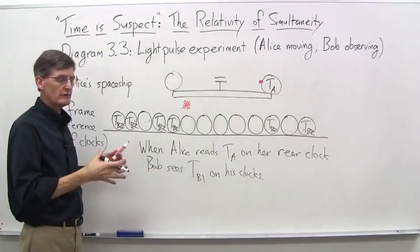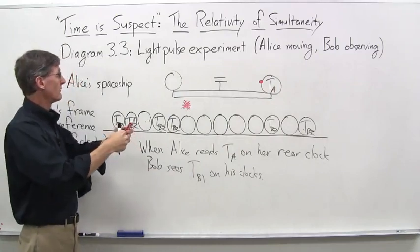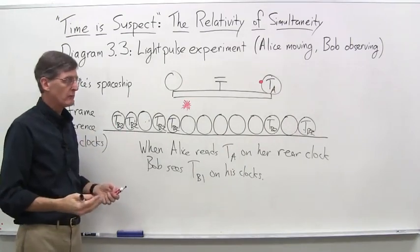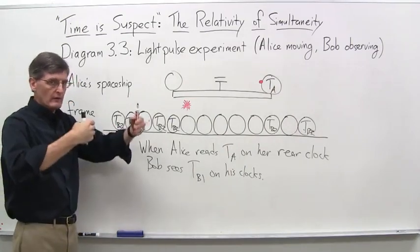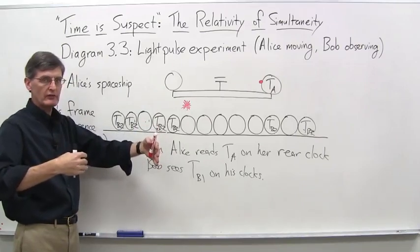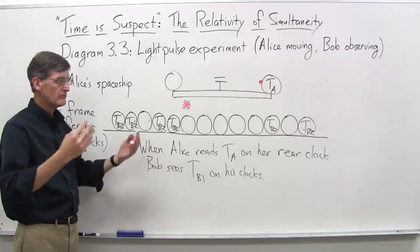Because, remember, from our initial diagram, 3.1, really, or even before that, I should go back to, not 3.1, but diagram 1, when, as far as she's concerned, when the light pulses hit her clocks, they both read T sub A. They're both simultaneous, no big deal.